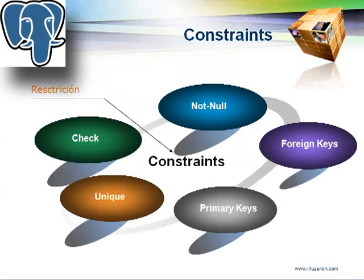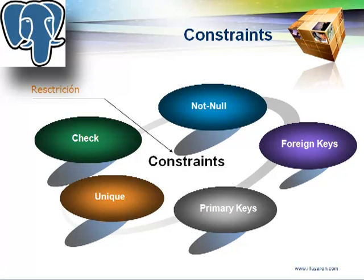Las Constraints, o restricciones, son las encargadas de asegurar la integridad referencial en las bases de datos. Por ejemplo, se puede restringir o limitar el tipo de dato que puede ingresarse a una tabla. Los tipos comunes de restricción son: Check, Not Null, Foreign Key, Primary Key y Unique.